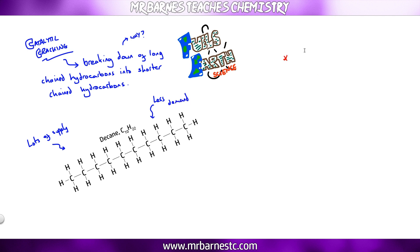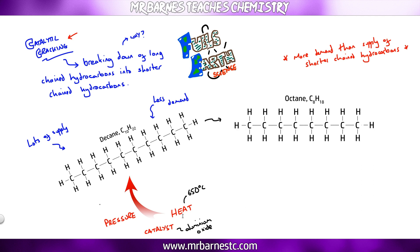But the smaller ones, like C2H4, ethene, we have more demand than supply. We don't have enough of them. So what we have to do is catalytic cracking. So we heat our decane, we put pressure on it and we use a catalyst, the heat being 650 degrees, catalyst being aluminium oxide, and it breaks those long-chained alkanes, long-chained hydrocarbons, down into shorter-chained ones. And in particular, you get a shorter-chained alkane and a shorter-chained alkene. And by doing that, we meet our demand for the shorter-chained hydrocarbons.